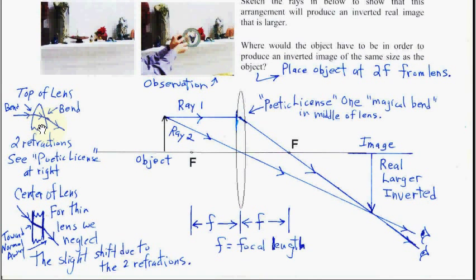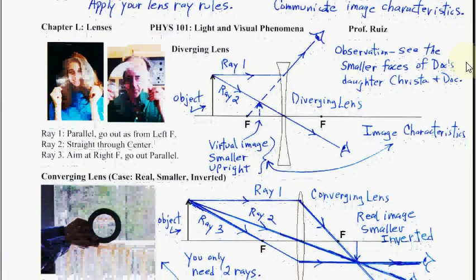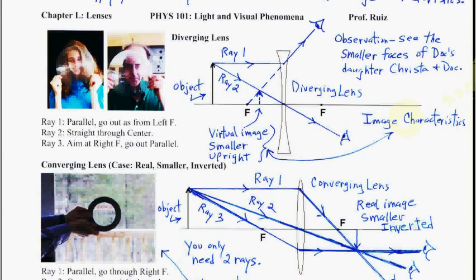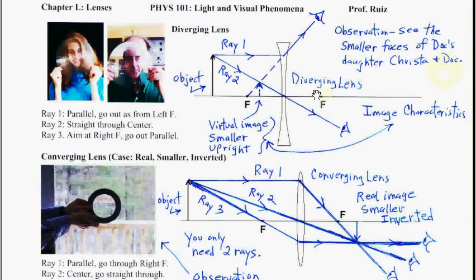This is a nice analysis that refers back to refraction earlier in the course — going from air to glass, you bend toward the normal; glass to air, you bend away from the normal. These ray rules come from those refraction rules. The focal length is the distance from the lens to point F, and you have a focal length on each side. For a diverging lens, the focal point is virtual — light appears to come from it. For a converging lens, light actually goes to the focal point.